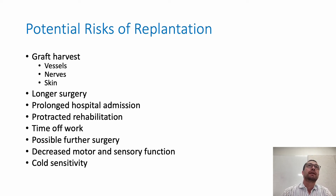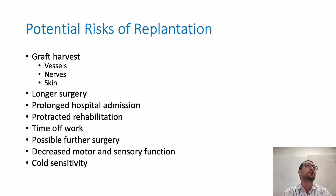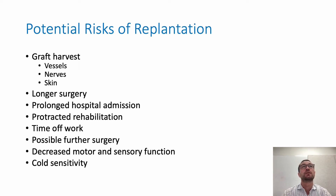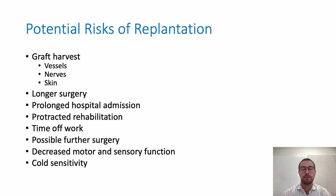If we're heading down the replantation route, some of the things we have to talk about with a patient as potential risks include potentially needing to take grafts — so harvesting vessels, nerves and skin. It's a longer surgery than a secondary amputation. It can be a prolonged hospital admission to monitor the success and acute complications. It can be a more prolonged rehabilitation with more time off work. Often there's further surgery to address tendon issues down the track. And the replanted limb can have decreased motor and sensory function and cold sensitivity compared to pre-injury levels.